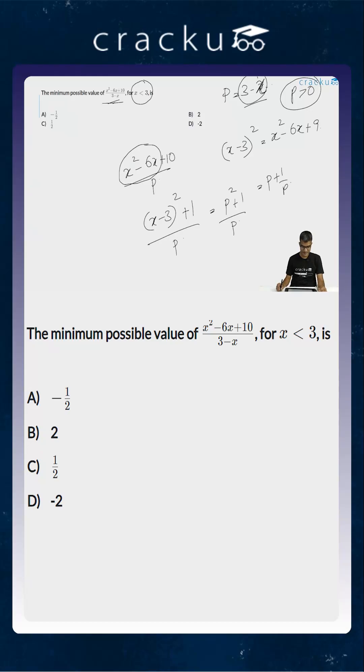Now what is the value of p + 1/p? The minimum value of p + 1/p when p is greater than 0 will be equal to 2. There are many ways you can prove this, because p and 1/p are both greater than 0.